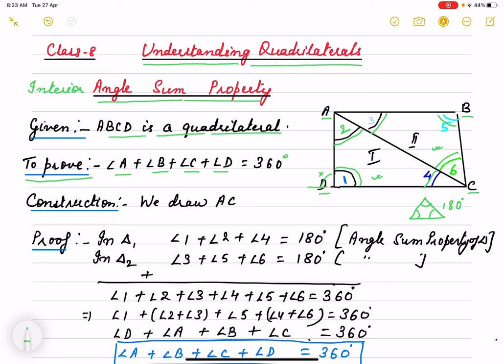If we add all angles, then it is 360 degrees. For this, we need to construct. We construct AC. We join the line segment AC.